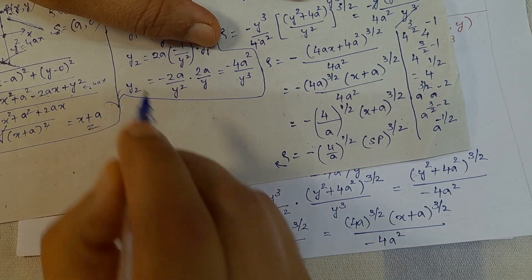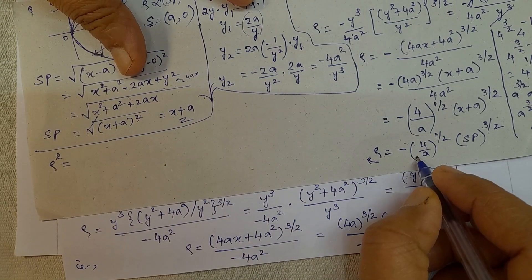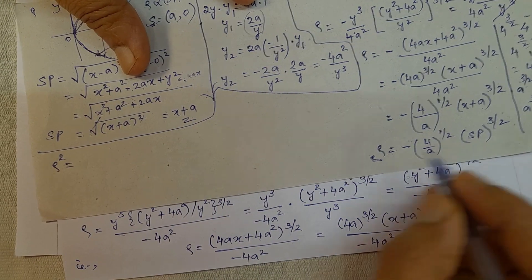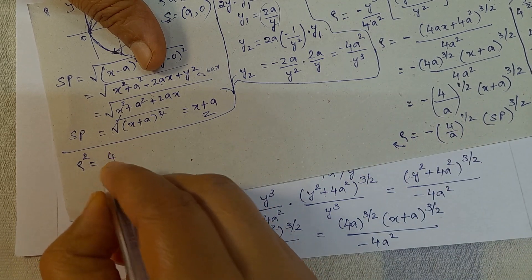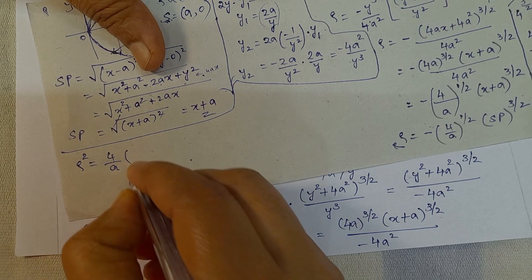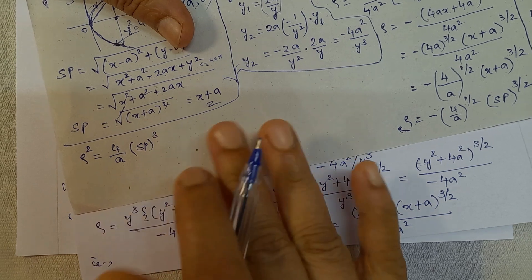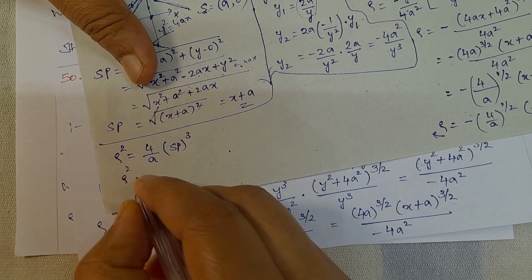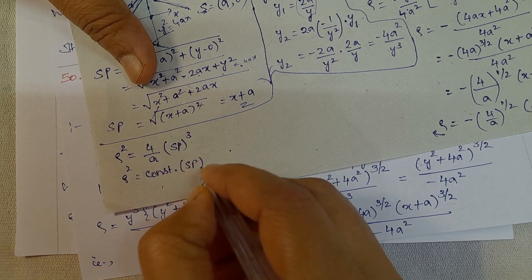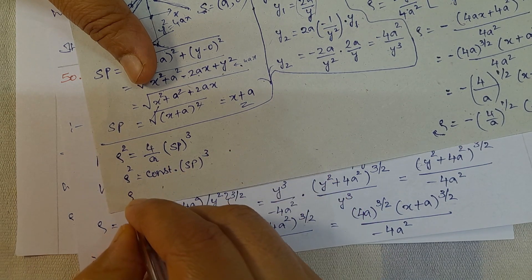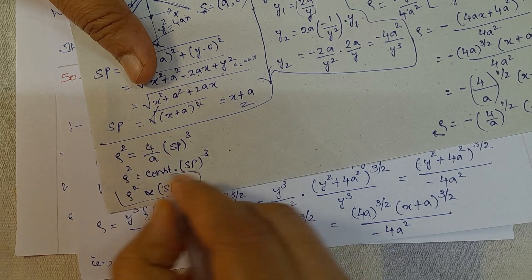Squaring both sides of the ρ expression: ρ² = (4/a) · (x + a)³. Since SP = x + a, we get ρ² = (4/a) · SP³. Since 4/a is a constant, ρ² is directly proportional to SP³. Hence proved.